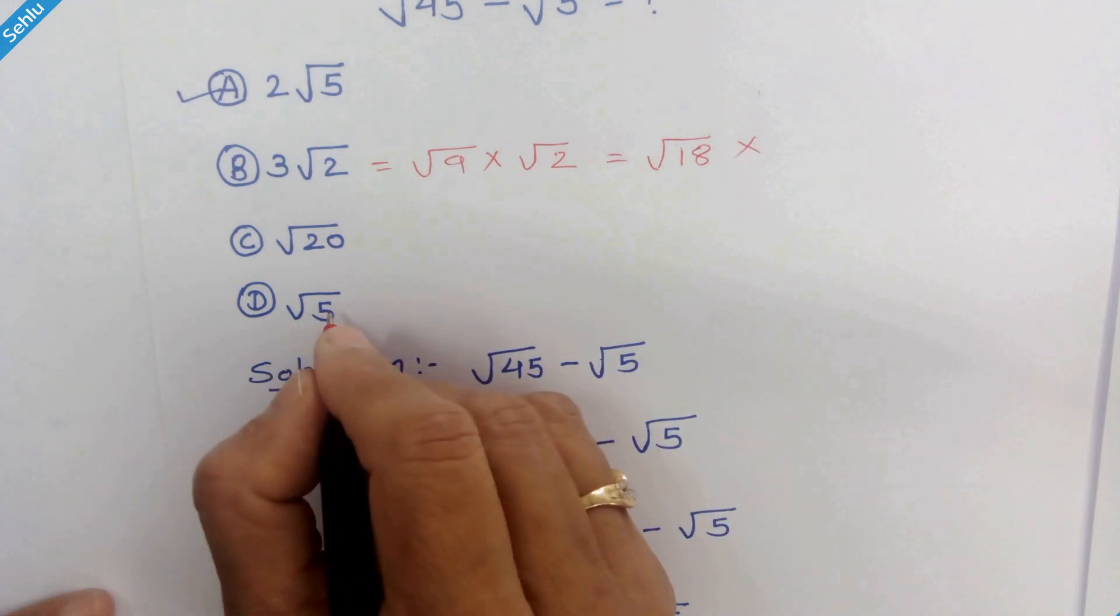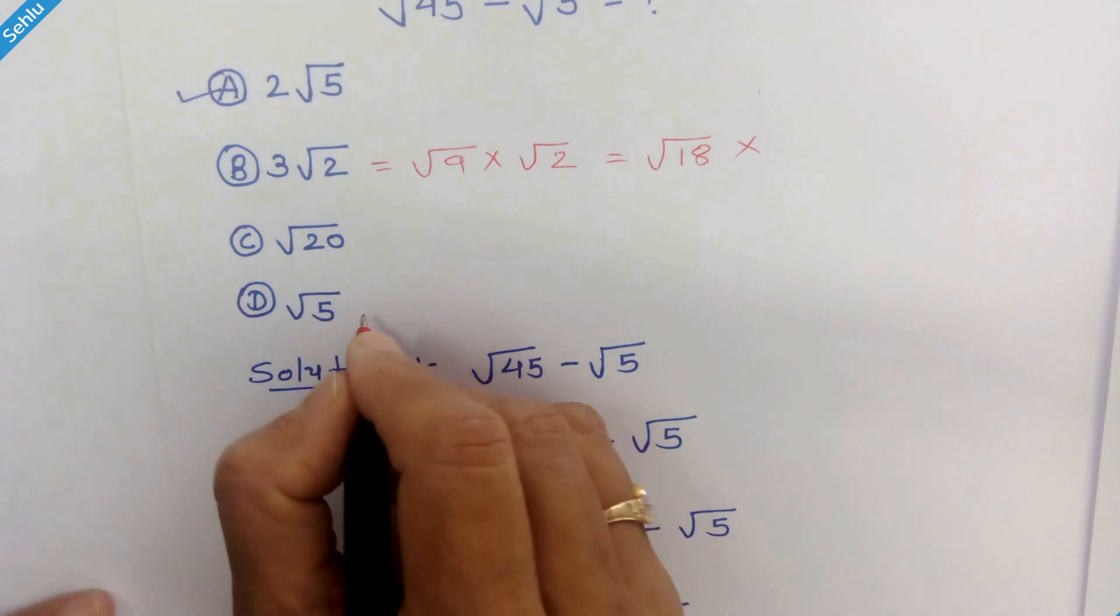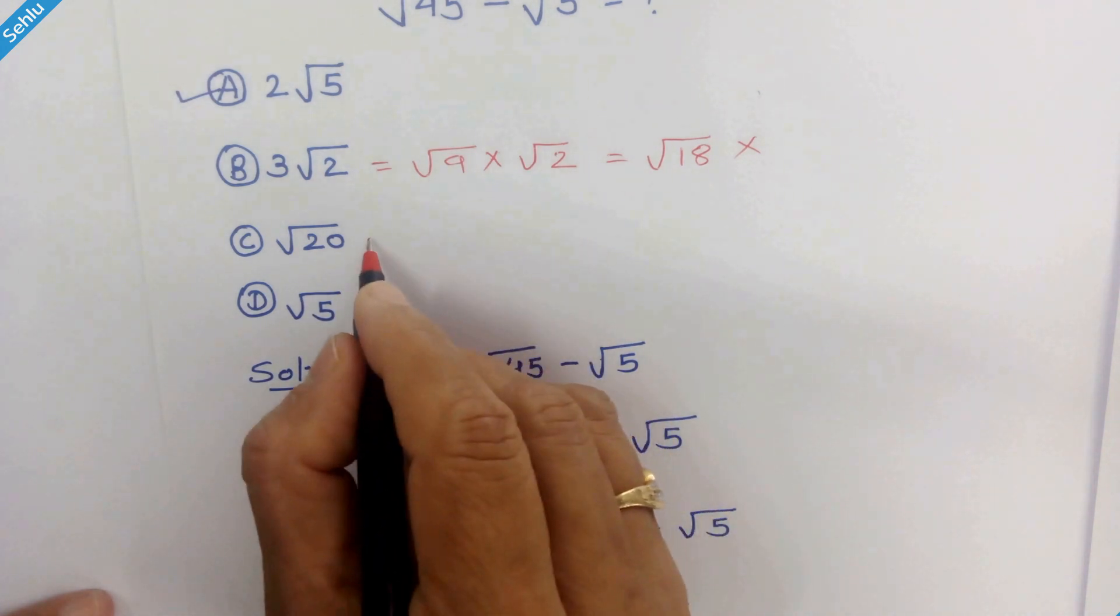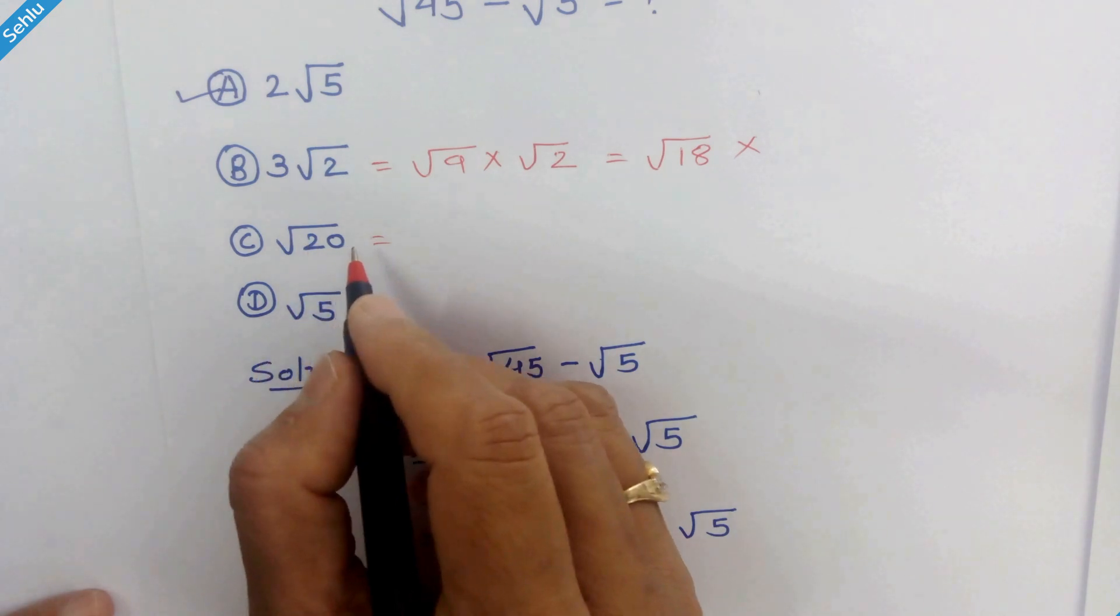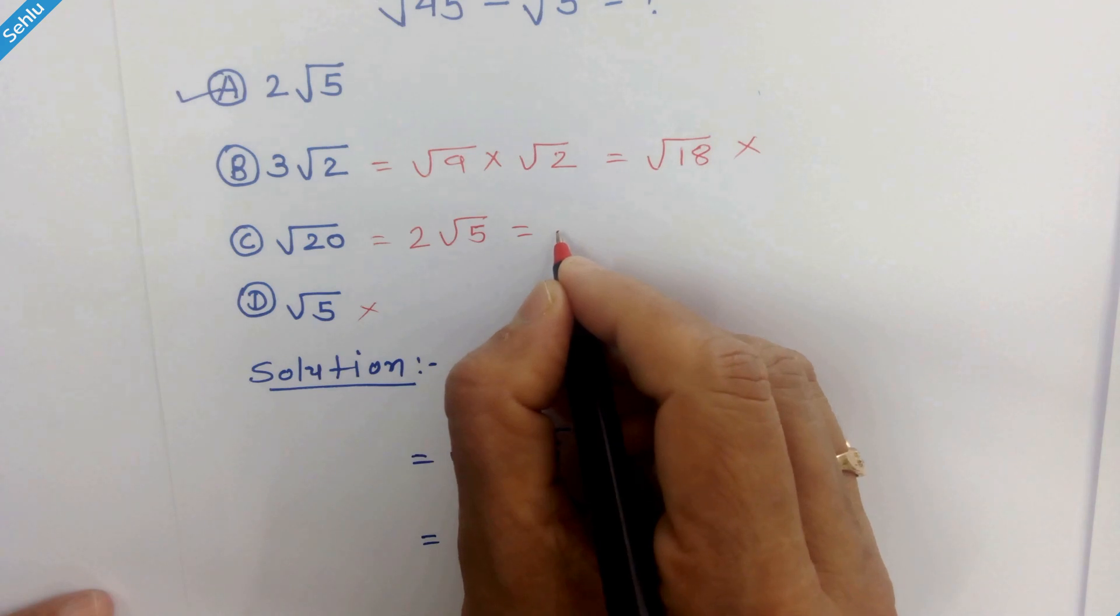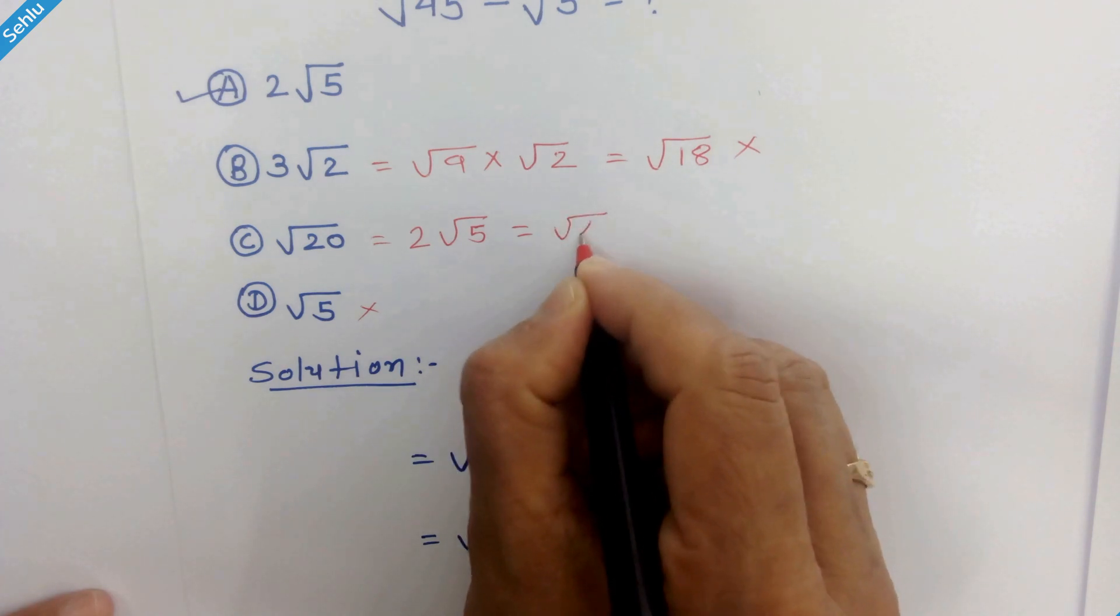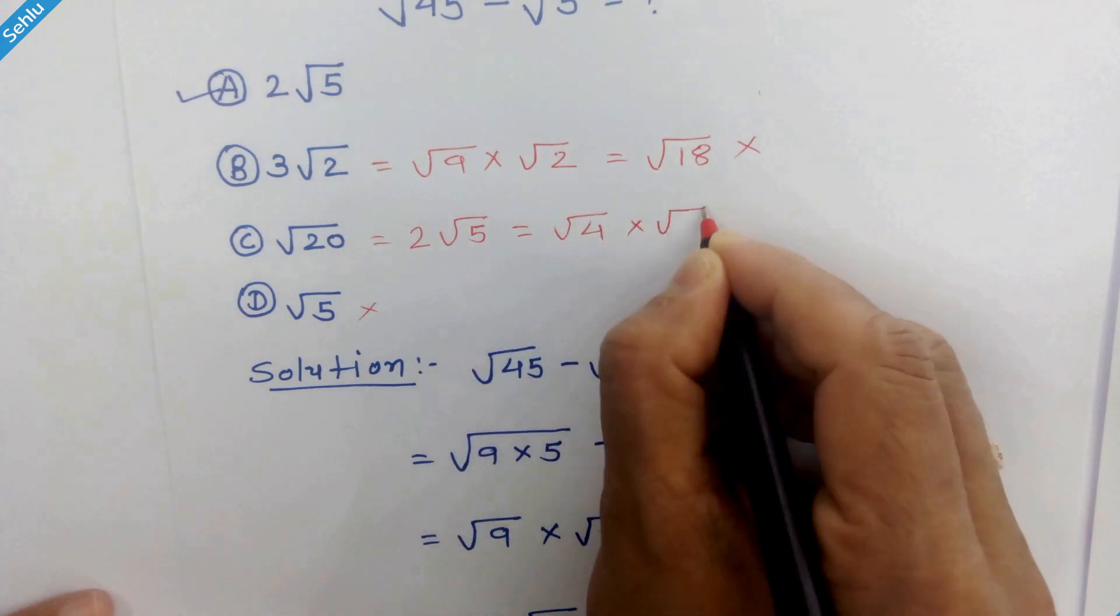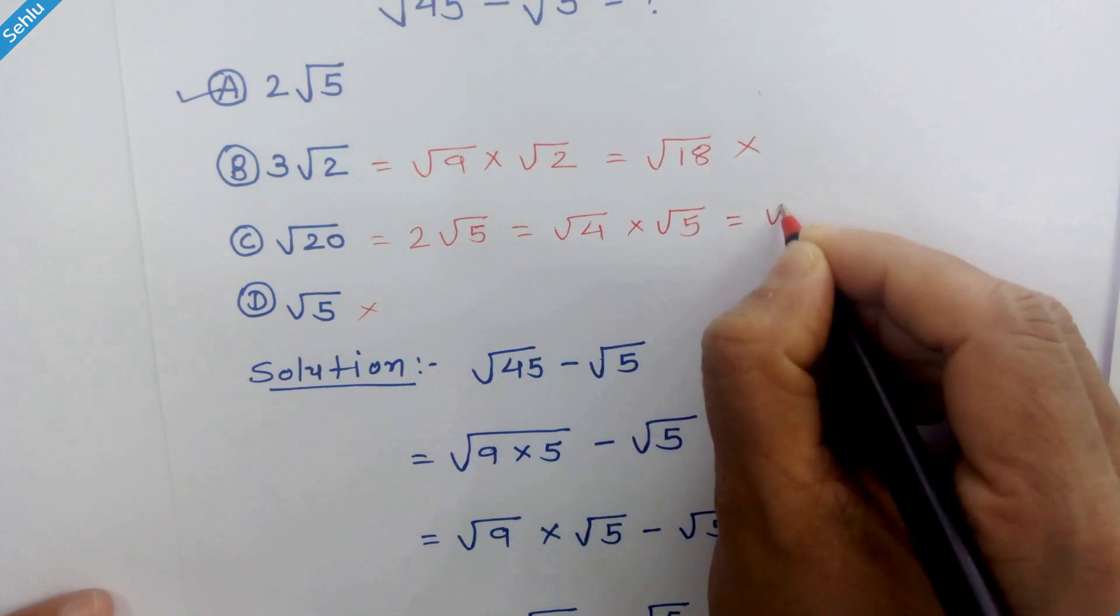And option D square root of 5 is obviously incorrect. Now let's see square root of 20. So our answer is 2 times square root of 5. It can be written as square root of 4 times square root of 5. So it will be square root of 20.